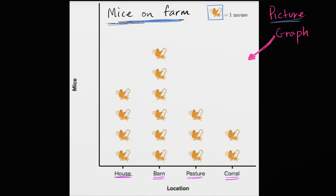So for example, in the house, we see this, they tell us that's one mouse. This is one plus one plus one plus one, or four mice. Four mice in the house.